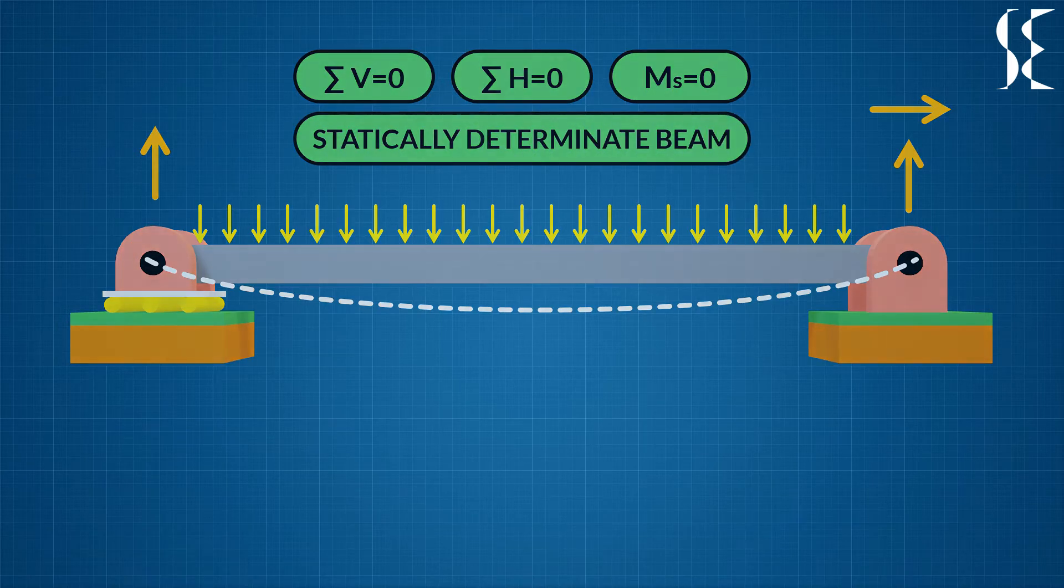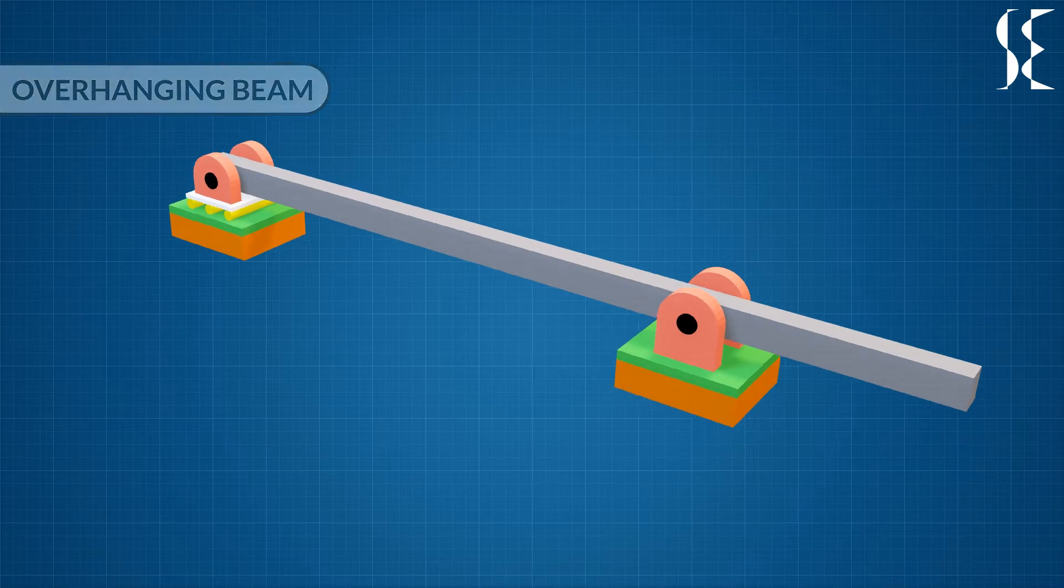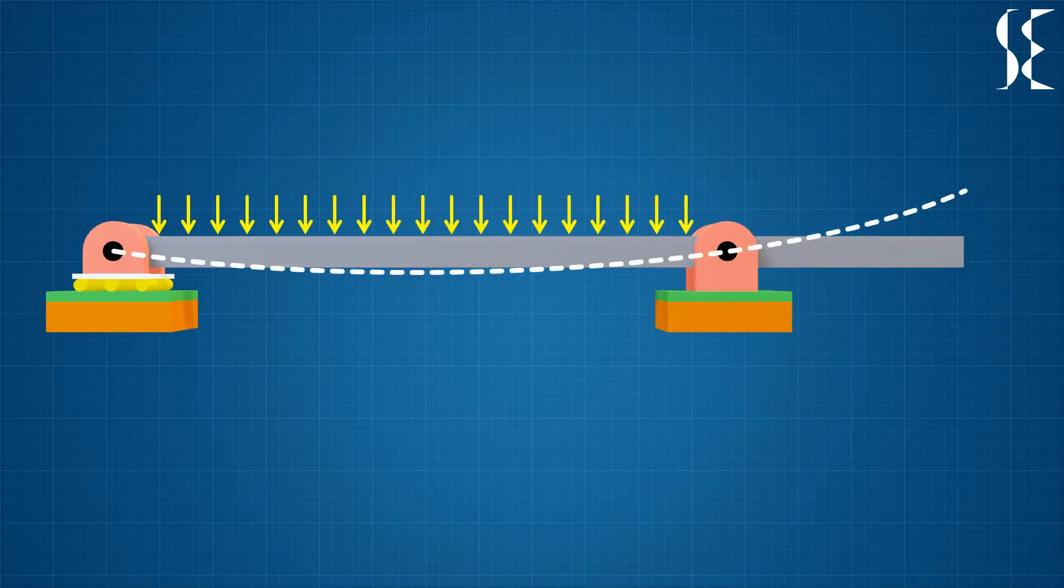Next, we are looking at an overhanging beam in which some portion of the beam extends from support from one side. The deflected shape of the beam on uniform loading between supports would look something like this in which both the supports allow rotation of the beam.